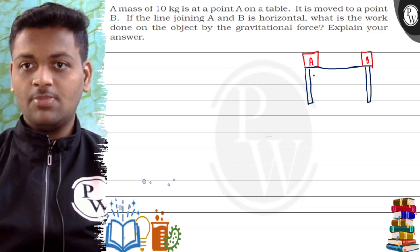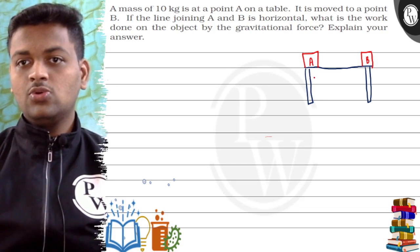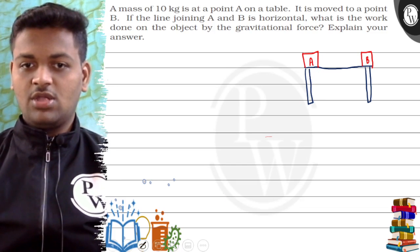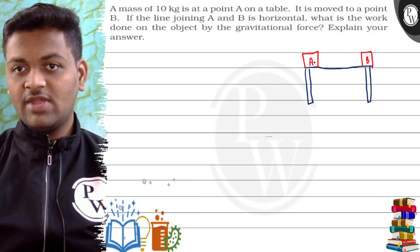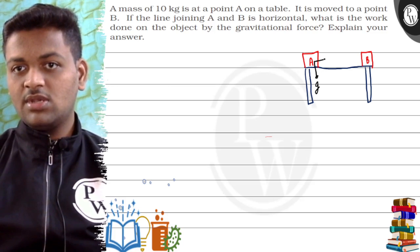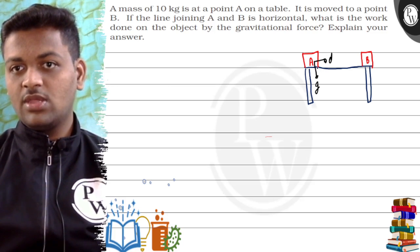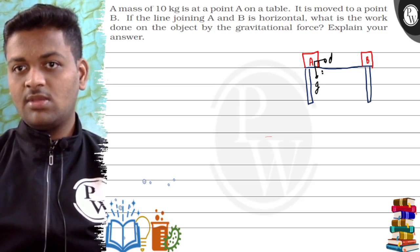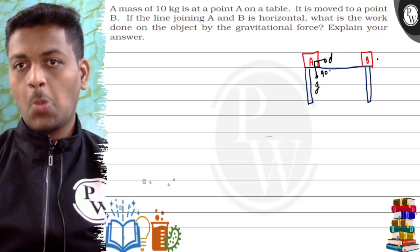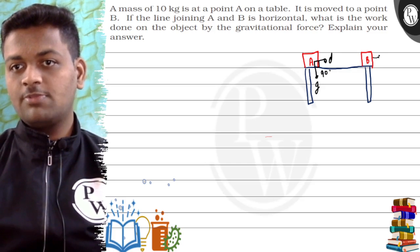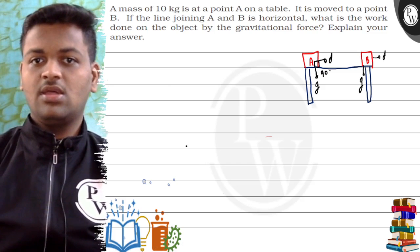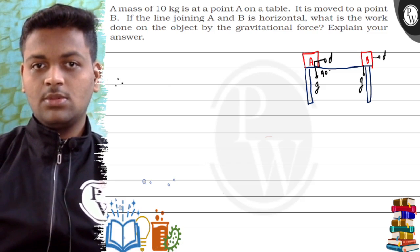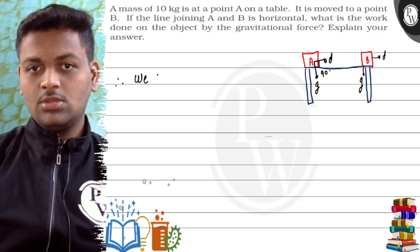The mass is moved from point A to point B, and we are asked how much work is done. Now, we know that the gravitational force acts downward, and the displacement of the block is in the horizontal direction. So the angle between them is 90 degrees, because displacement is horizontal and the gravitational force acts downward.